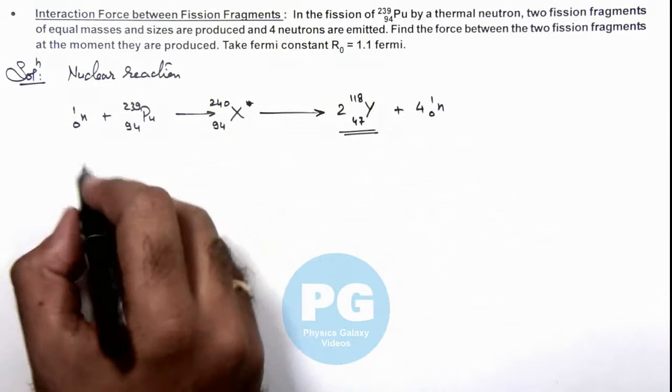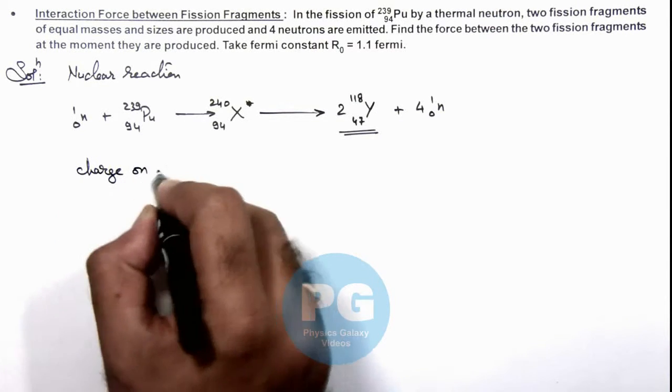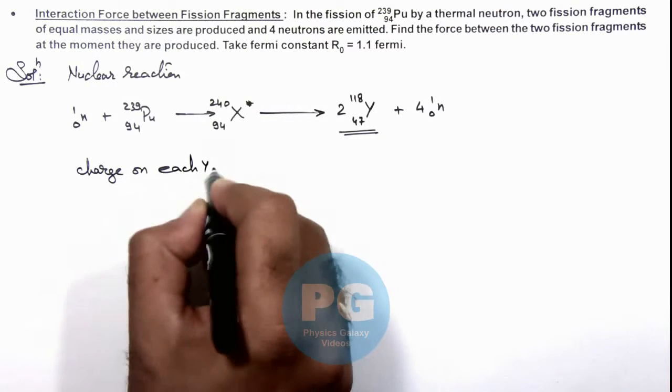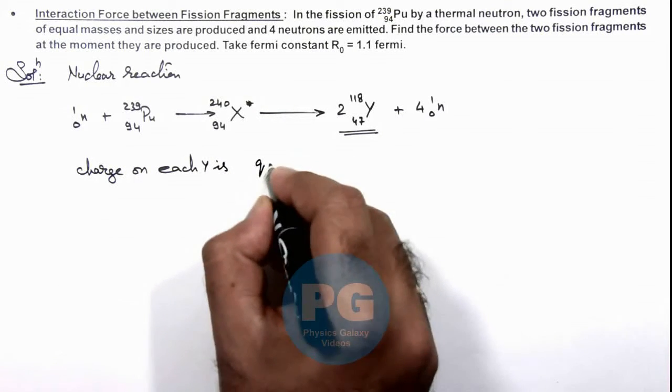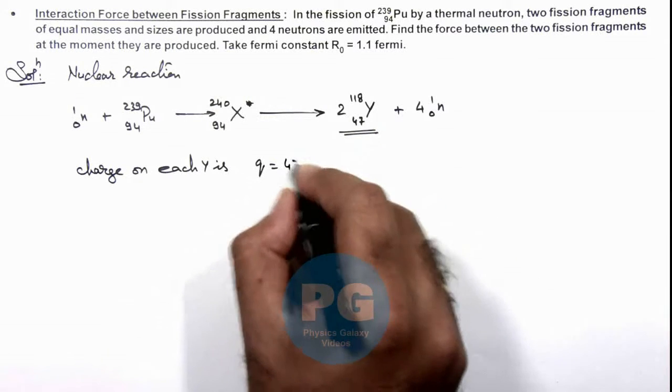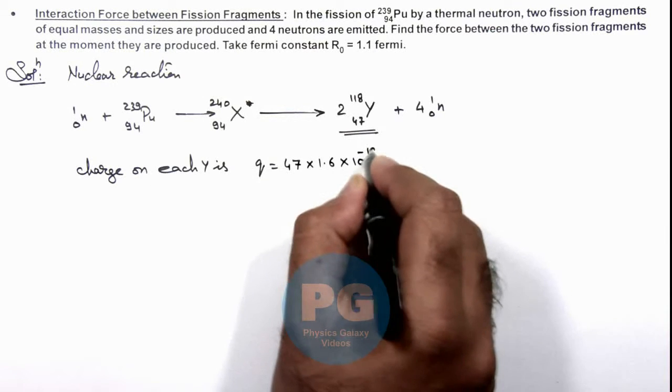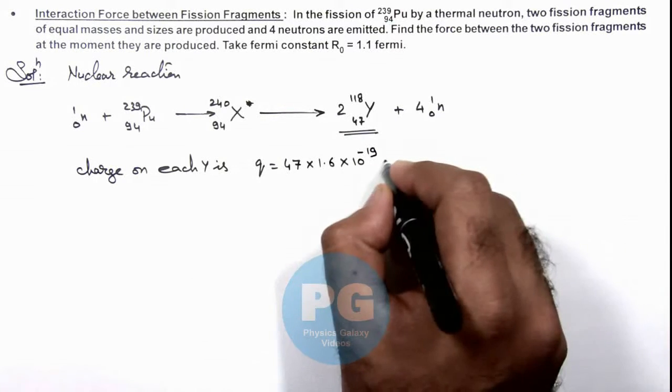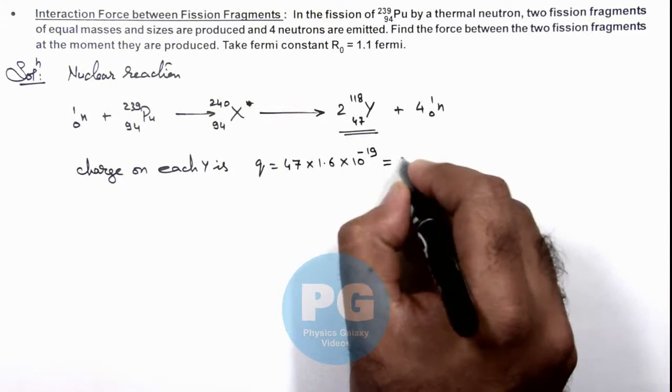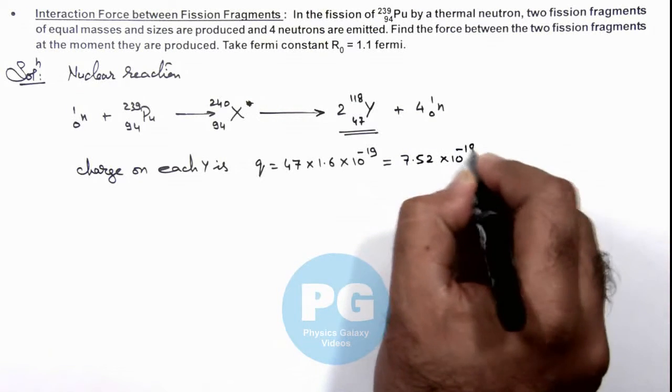Now in this situation we can directly calculate first the charge on each Y. We can see the nuclear charge is 47, so it is 47 multiplied by 1.6 into 10 to power minus 19. So this numerical value is 7.52 multiplied by 10 to power minus 18 coulomb.